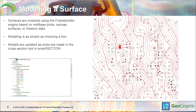Modeling your surfaces is done using the Frame Builder engine, based either on well-based picks from the database, isomap surfaces built in GeoAtlas, or seismic horizon data from SizeVision. Modeling is very simple — you'll see the surfaces on your left-hand side, click a checkbox, and it'll show up. These are updated on the fly as picks are made in the cross-section tool in Smart Section.